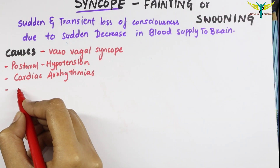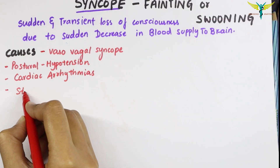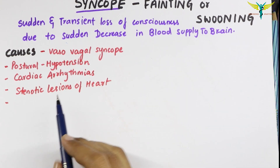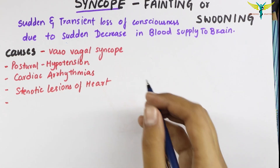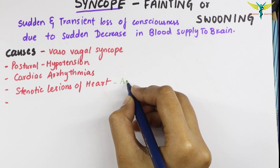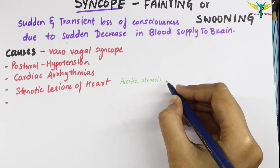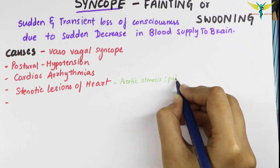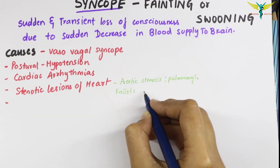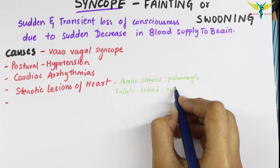Syncope can also be caused by stenotic lesions of the heart. Examples of stenotic lesions include aortic stenosis, pulmonary stenosis, Fallot's tetralogy, and mitral stenosis.